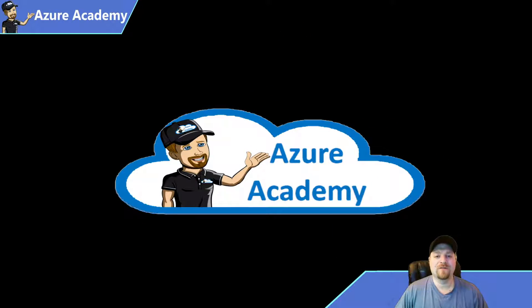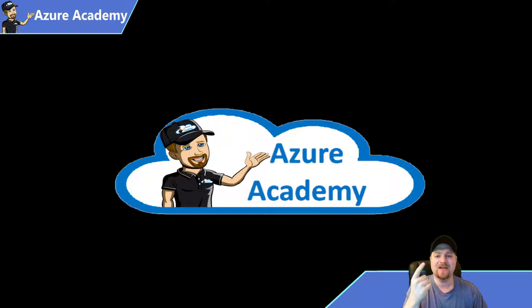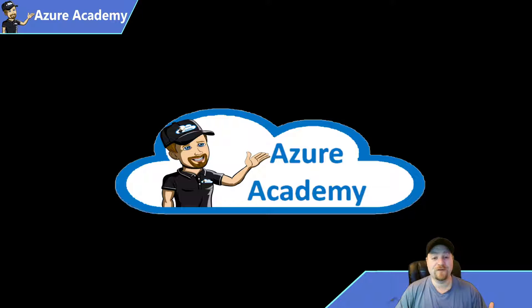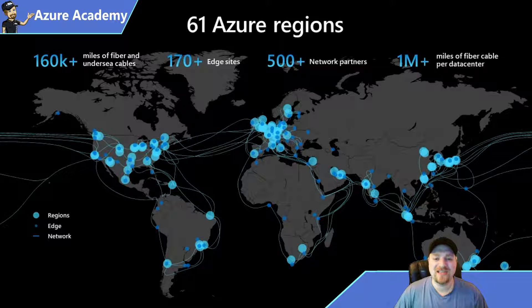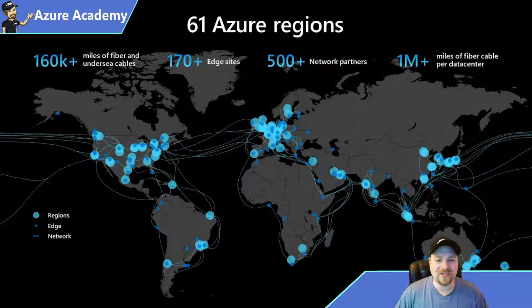The updates we're going to focus on have to do with three major areas: the platform of Azure, management, and services. So the first thing is the Azure data centers. There are now 61 regions of Azure and over 170 edge sites projected into the cloud. Expansion over the globe is happening at a tremendous pace.